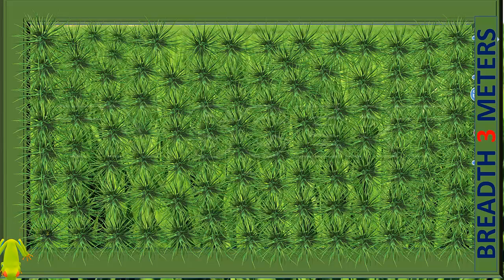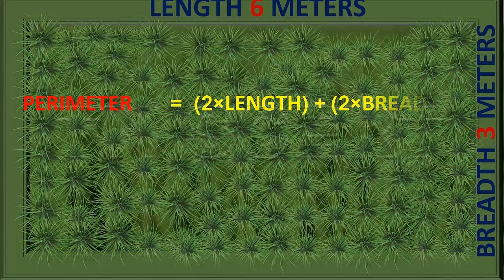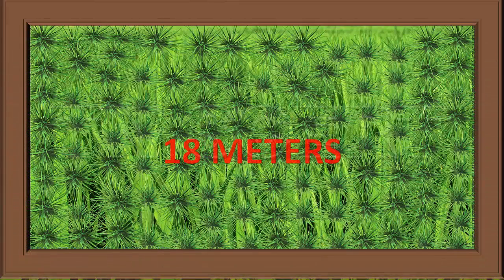Let us see the perimeter. Perimeter is equal to 2 into length plus 2 into breadth. That is 2 into 6 plus 2 into 3, which is equal to 12 plus 6. That is 18 meters. Hence, the perimeter of the field is 18 meters.